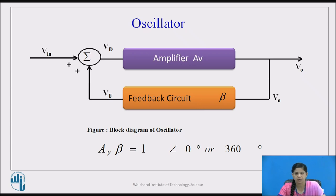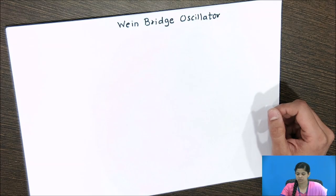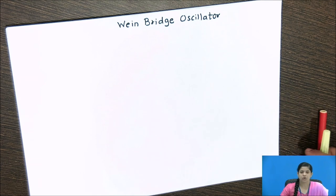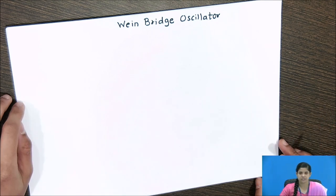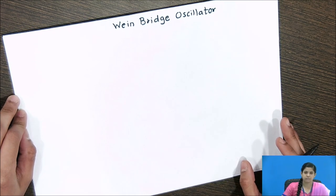Based on this criteria, we have seen the RC phase shift oscillator in the last lecture. Now in this lecture, we will see some other sinusoidal oscillator circuits. First, we will see the circuit of Wien bridge oscillator. Wien bridge oscillator is most commonly used because of its simplicity and frequency stability.